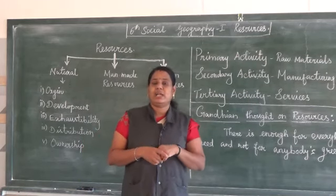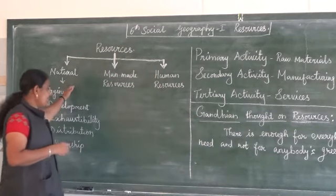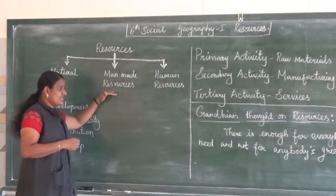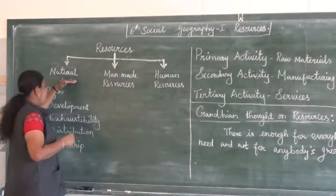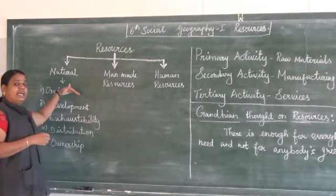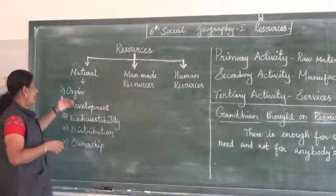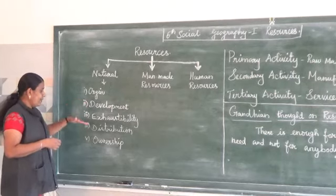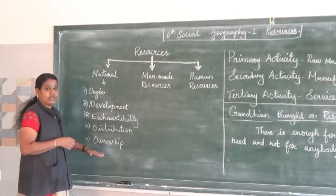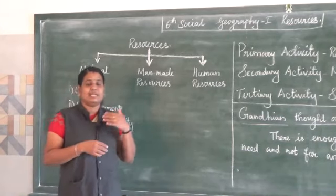Resources can also be classified into three: natural resources, man-made resources, and human resources. From these, natural resources can be further classified into different groups based on origin, development, accessibility, distribution, and ownership. These are the things we discussed in the last class.